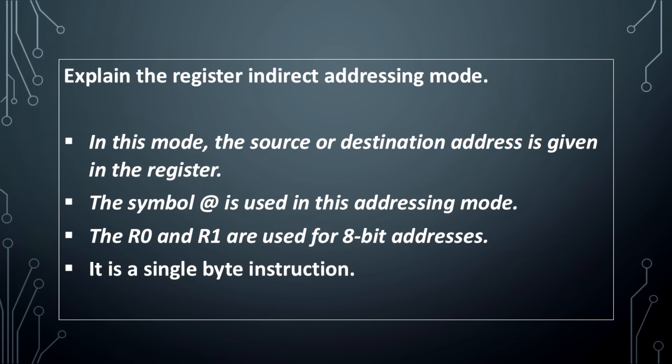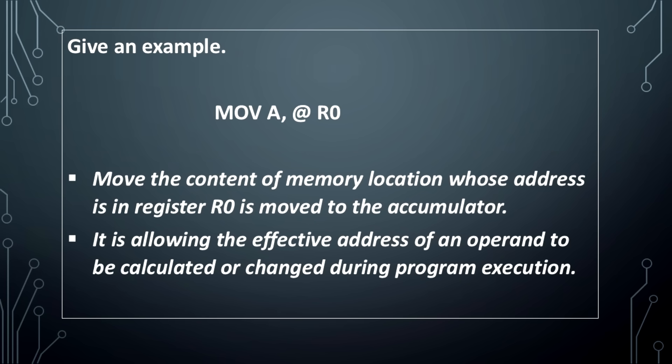In the register indirect addressing mode, the source or destination address is given in the register. The symbol @ is used in this addressing mode. The registers R0 and R1 are used to hold 8-bit addresses. It is a single-byte instruction. Example: MOV A, @R0 — the content of the memory location whose address is in register R0 is moved to the accumulator.